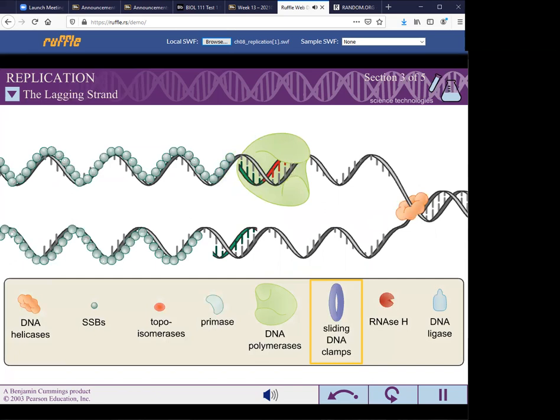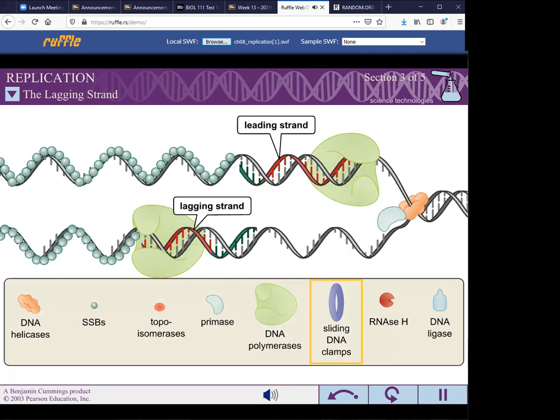Remember, DNA polymerase can only add dNTPs to the 3' end of a polynucleotide. Because both DNA strands must be passed through the replication machinery in the same overall direction, the lagging strand is synthesized discontinuously in small fragments.